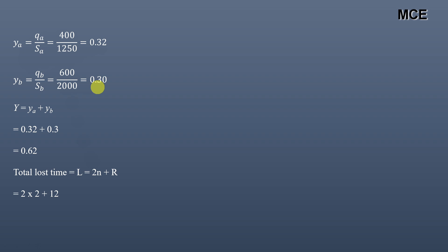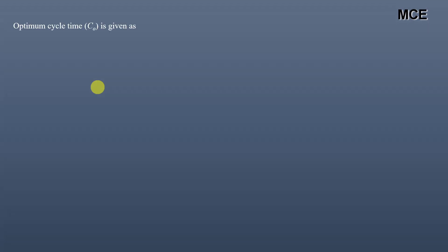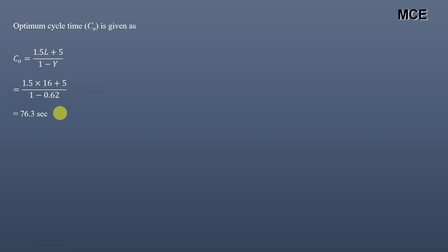The total loss time L = 2n + r = 2×2 + 12 = 16 seconds. The optimum cycle time C0 = (1.5 × 16 + 5) / (1 − 0.62) = 29 / 0.38 = 76.3 seconds, which we round to 76.5 seconds.